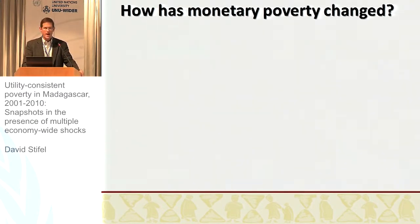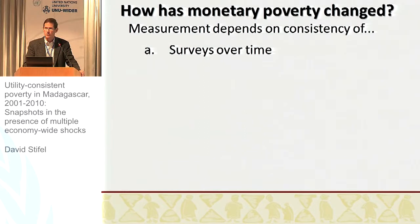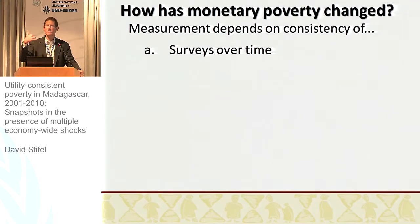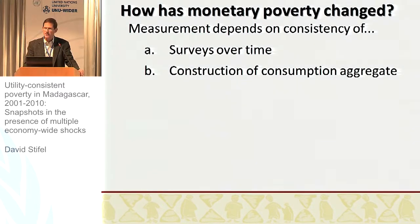How has monetary poverty changed? This depends in large part on the consistency of a number of things, starting with the surveys over time and the survey instruments. This is one thing that INSTAT has done very well. Following some work done with TRA back in 2000, trying to reconcile differences in survey designs in the 1990s, there has been a big emphasis to maintain the consistency of the survey instruments, questionnaires, and in particular the expenditure components.